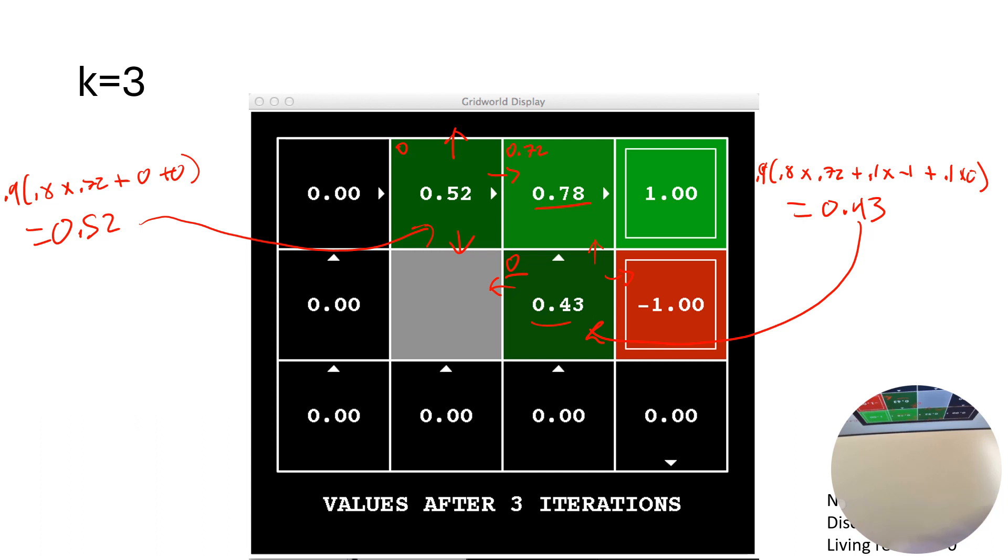Calculating the 0.78. So this is what the most common question was on: how do you go from 0.72 to 0.78? Not complicated. So when we go through: 0.9, and then still 80% chance we go this way, so 0.8 times 1, plus 10% chance we stay where we are, 0.1 times 0.72—working with that old value—plus 10% chance we go down, working with that old value of 0. That gives us 0.9 times 0.872, which gives us roughly 0.78.